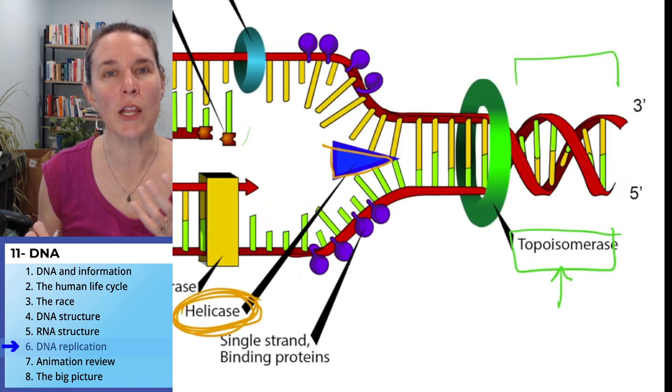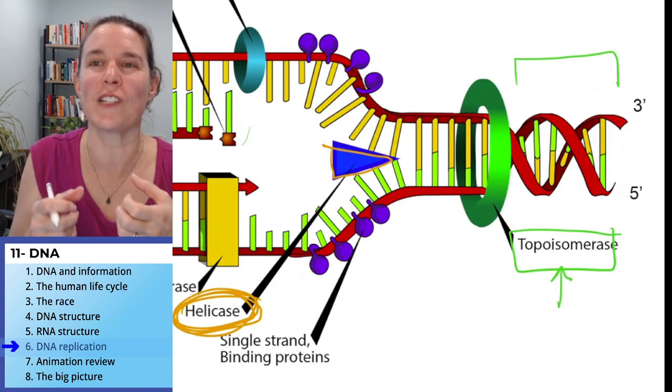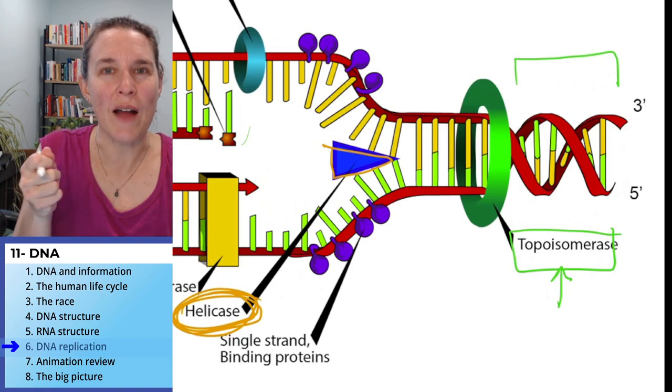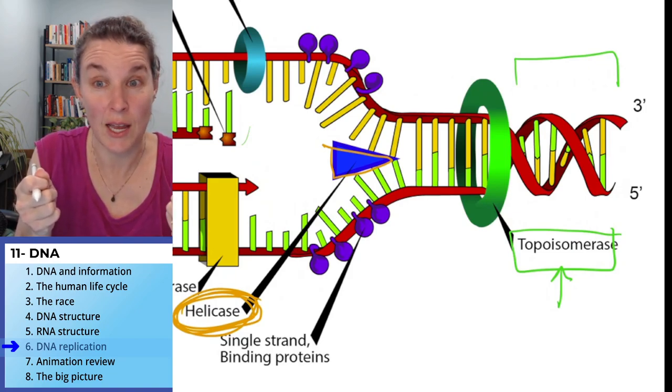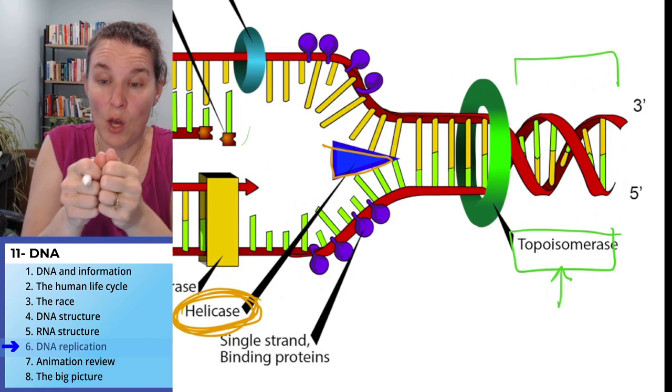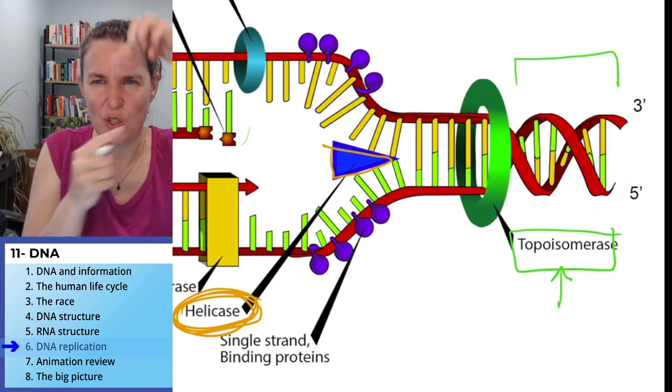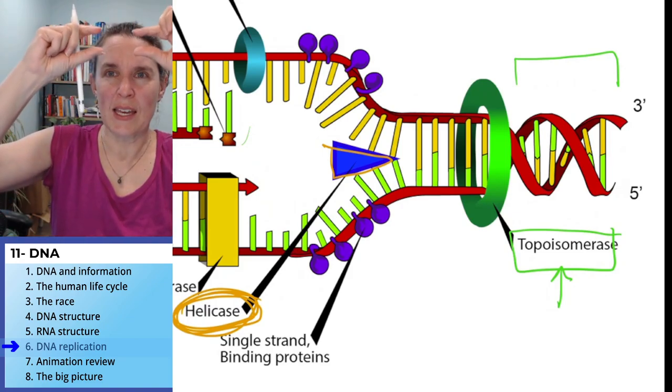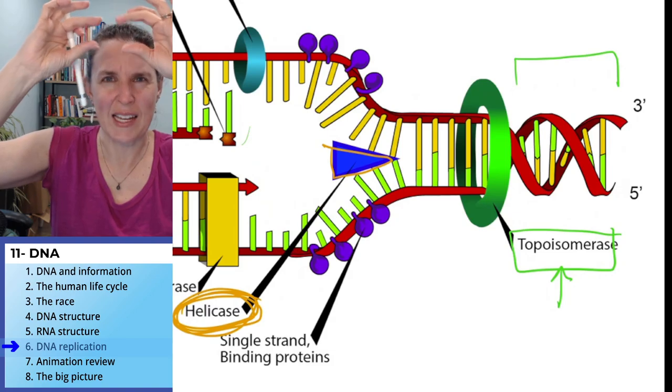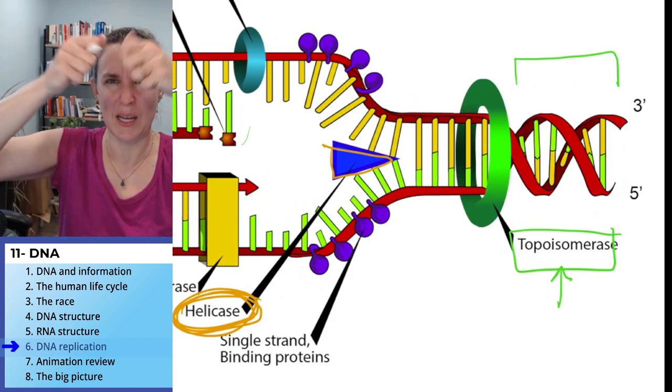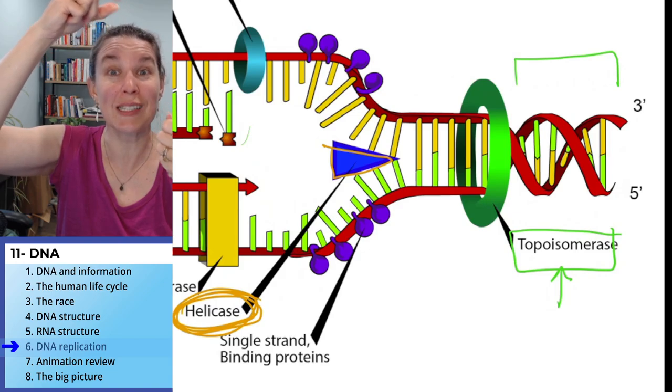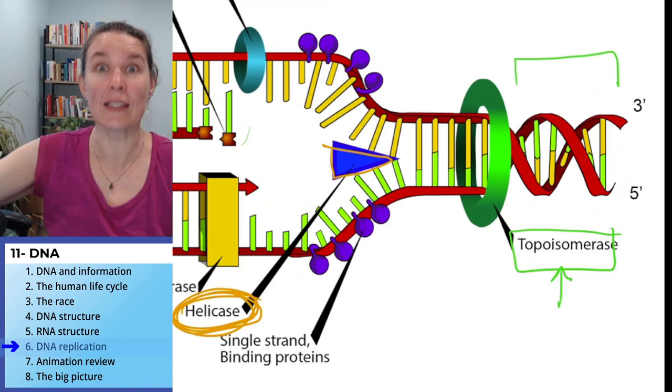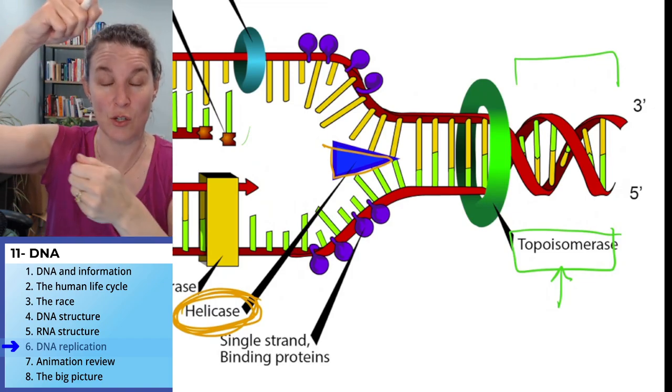Topoisomerase is a molecule that like imagine this. If you, I know you've done this because I totally have done this. When you try to unravel a piece of rope, why have I done this? I don't know, but I definitely have. When you try to like separate out the strands of rope or yarn, if you just separate it, you get like it overwinds. It's called super coiling that happens above.